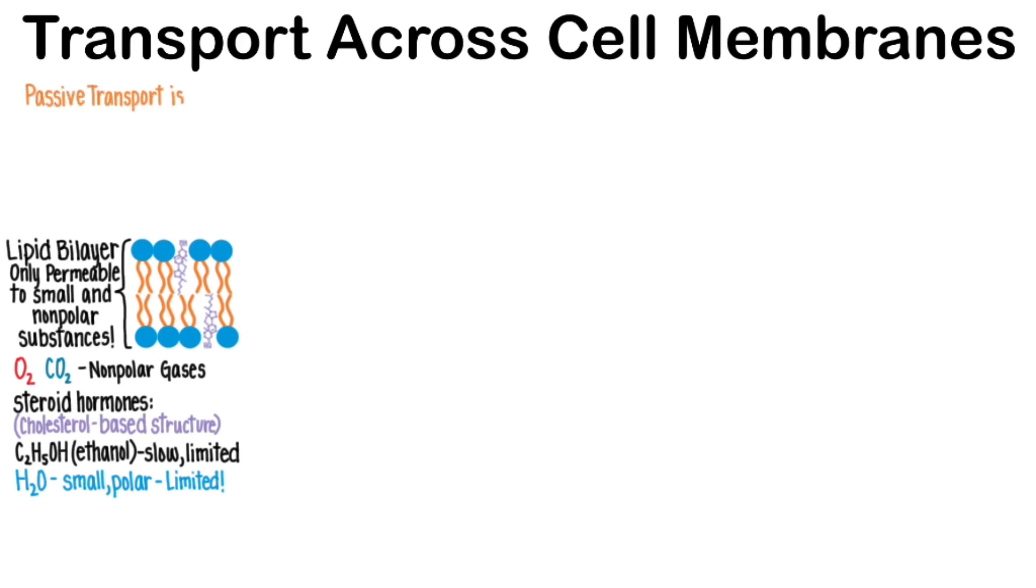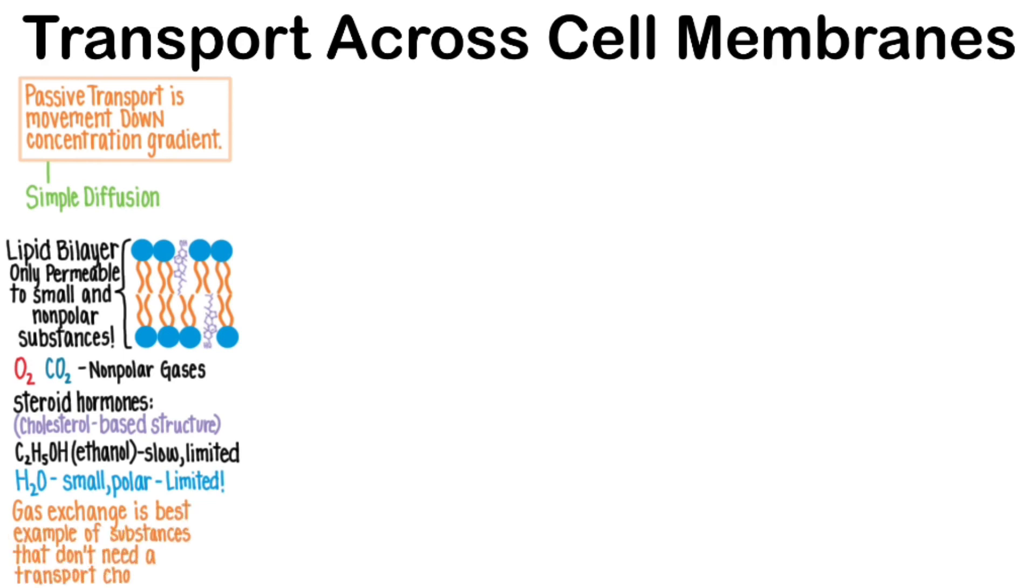Passive transport is movement down a concentration gradient. Simple diffusion is when the substance can pass through the lipid bilayer. Gas exchange of oxygen and carbon dioxide is the best example for healthcare students of substances that don't need a transport channel.